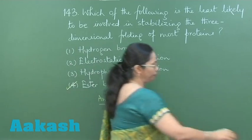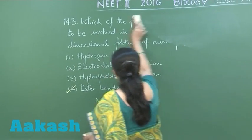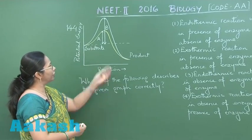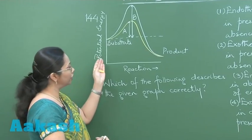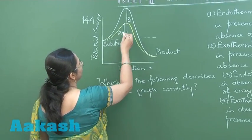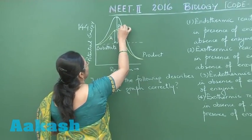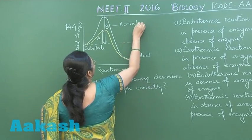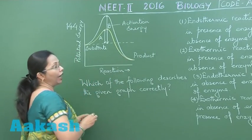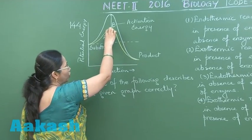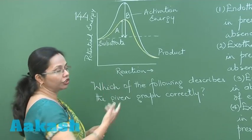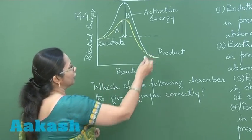Let's move on to question 144. In this question we have a graph showing potential energy and the reaction. Here, B is the activation energy required for the reaction to occur in the absence of the enzyme, and in the presence of the enzyme the activation energy required is A, which is certainly lesser.